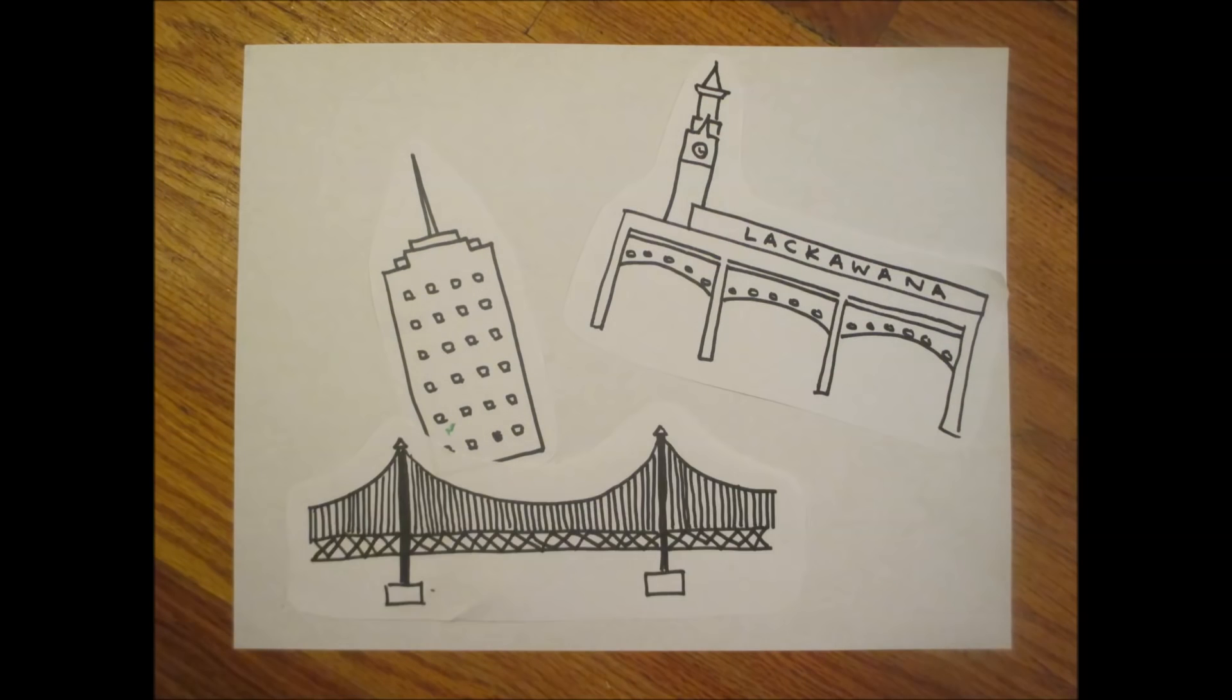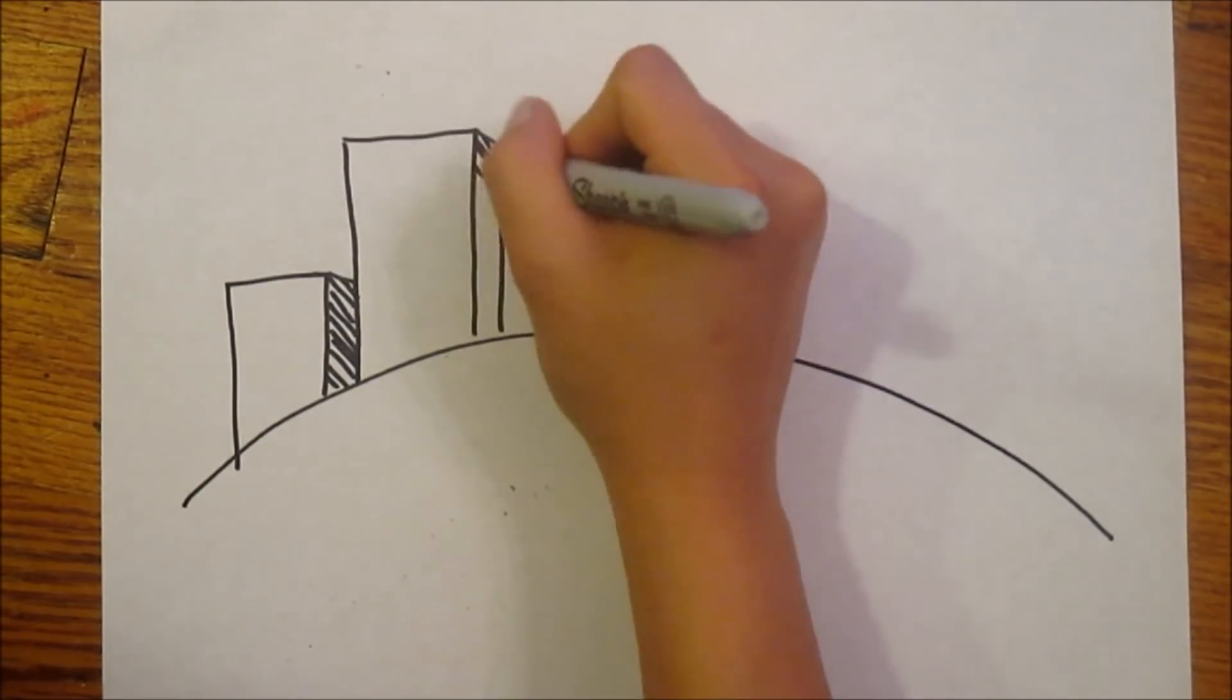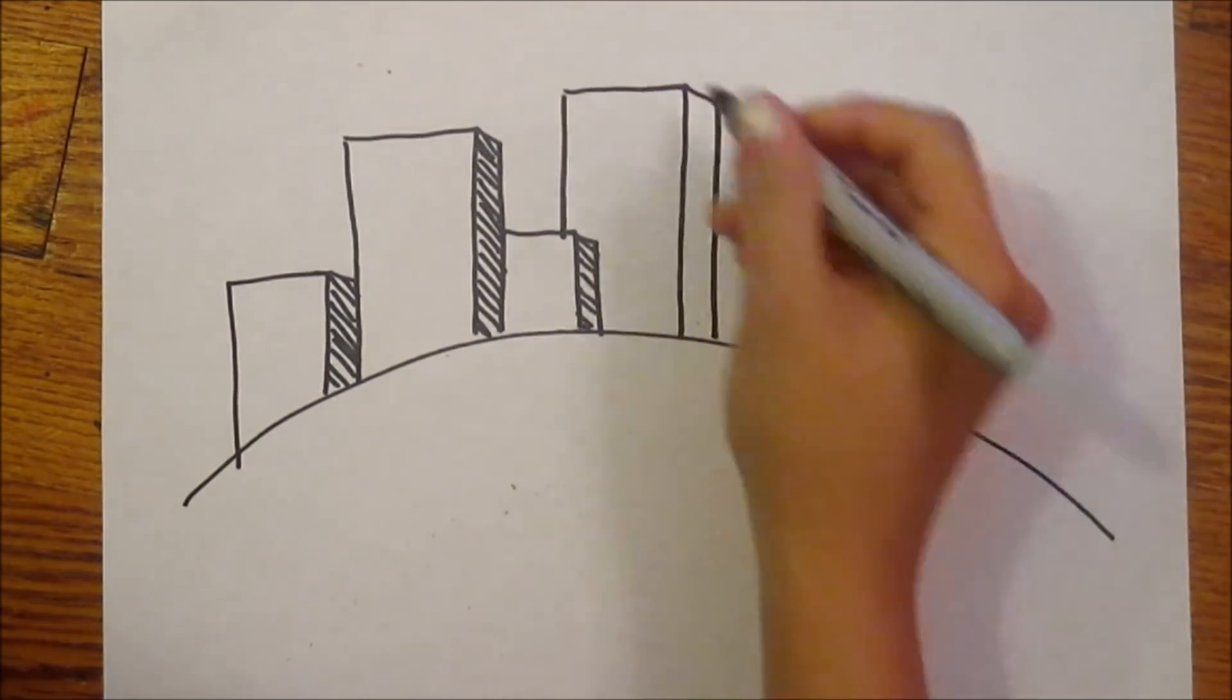Skyscrapers, bus terminals, train stations, airports, bridges. These are just some of the many examples of structures found in densely packed urban areas.